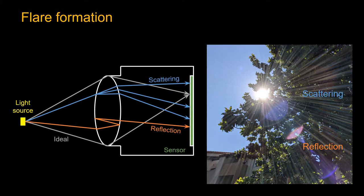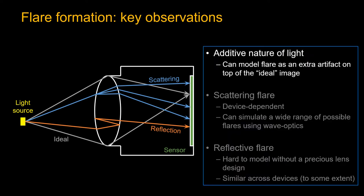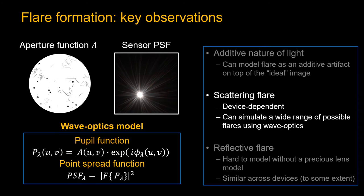Based on the flare formulation model, we have three key observations. First, given the additive nature of light, we can model flare as an extra artifact on top of the ideal image. Second, for the scattering flare, it will be device-dependent because the defect from each camera can be different. Training from one device might not generalize well for other devices. Instead, we build a wave optics model and simulate the sensor image given a lens characterized by a random aperture function. Detailed derivations can be found in the paper.